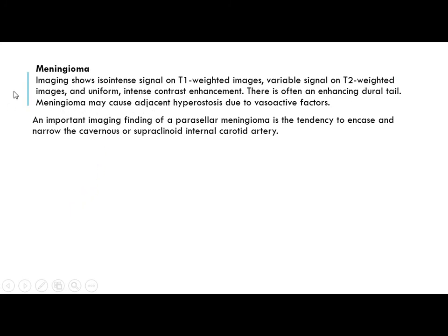Imaging shows intense signal on T1-weighted imaging and variable signal on T2, with uniform intense contrast enhancement. There is an enhancing dural tail, and parasellar meningioma causes adjacent hyperostosis due to vasoactive substances. An important imaging finding of parasellar meningioma is its tendency to encase and narrow the cavernous sinus and supraclinoid internal carotid artery.